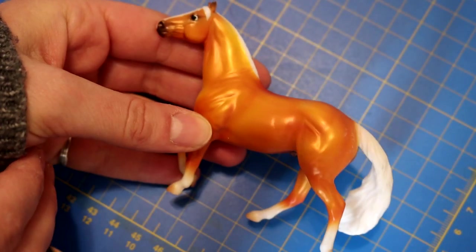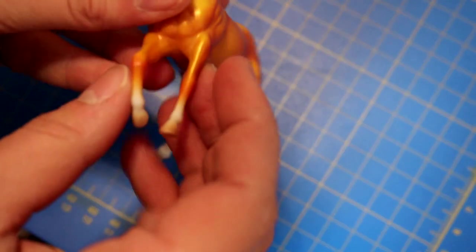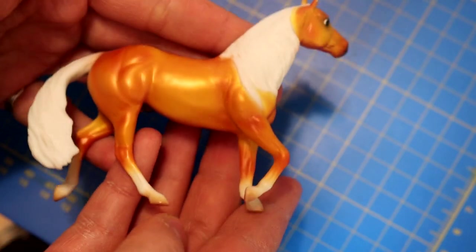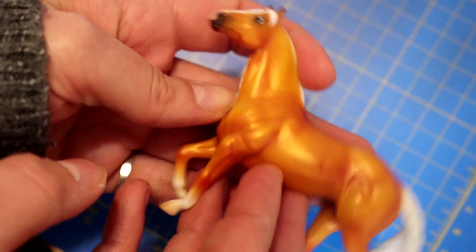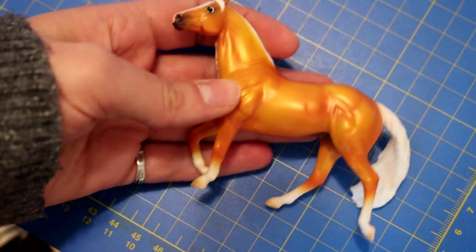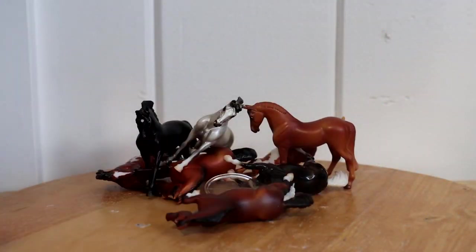Recently Breyer has been releasing different kinds of generations in the shrunken versions of traditional Breyer models. There's also generation 5 and generation 6 stablemates but they all kind of fall into the category alongside the generation 3.